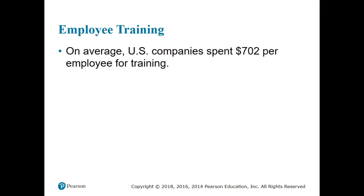On average, U.S. companies spent $702 per employee for training, totaling more than $59 billion in 2011. By 2015, U.S. business firms spent more than $70.6 billion on formal employee training — significantly more. Managers are responsible for deciding what type of training employees need, when they need it, and what form that training should take.